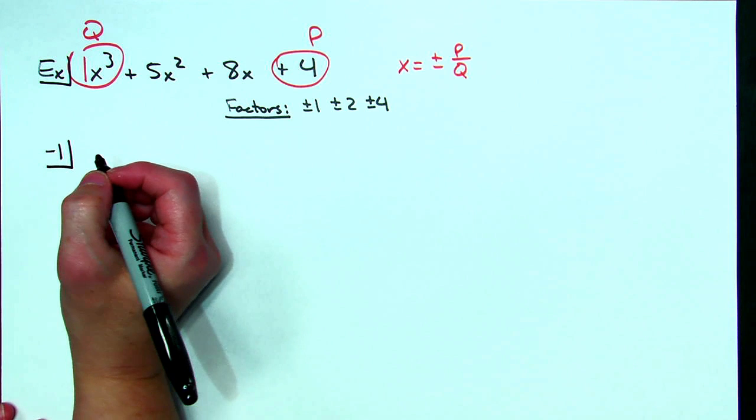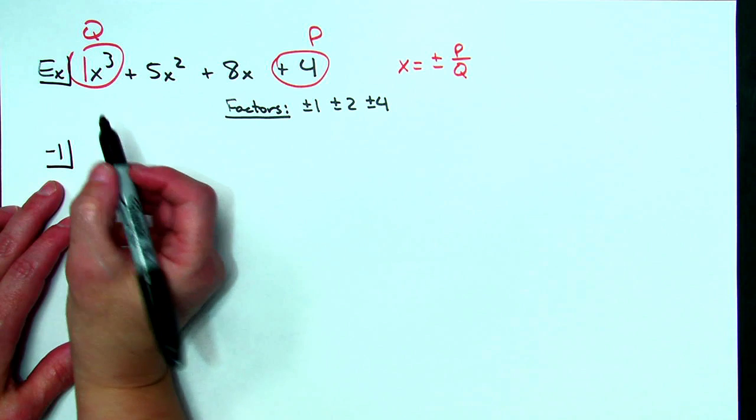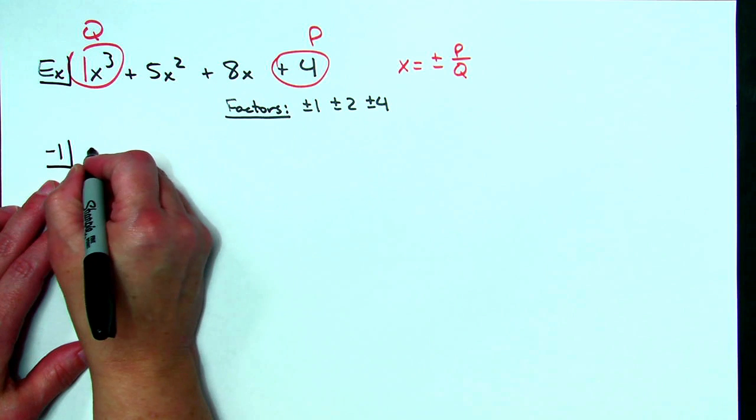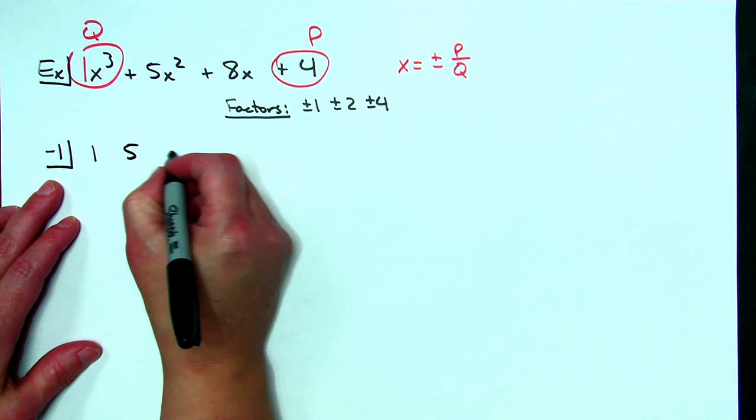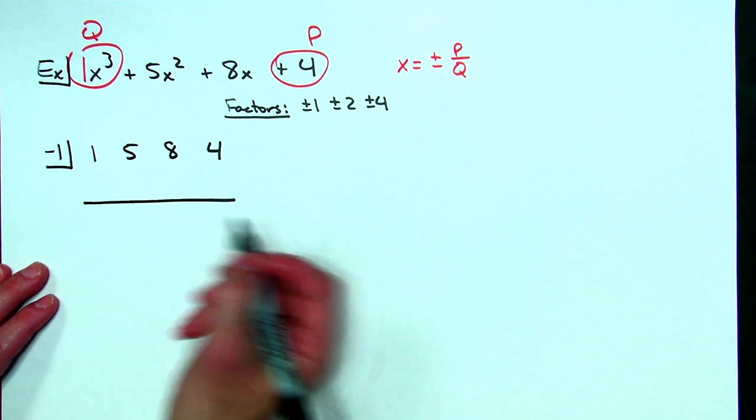So negative one I want to see if this is going to be a root so I'm going to put negative one in my little box for my synthetic division. I'm going to take the coefficients and write them down so I'm going to have a one five and eight and four.